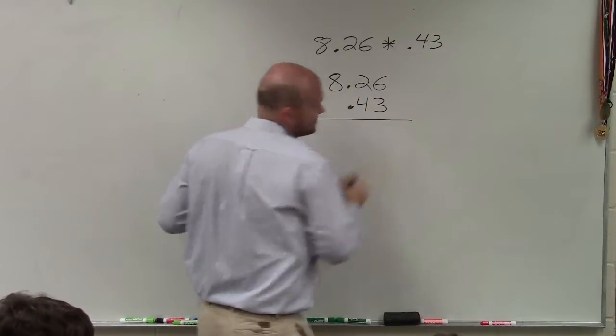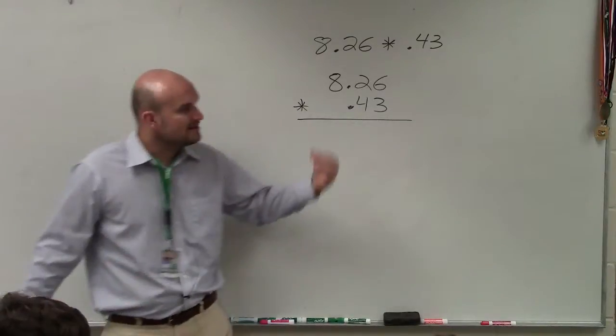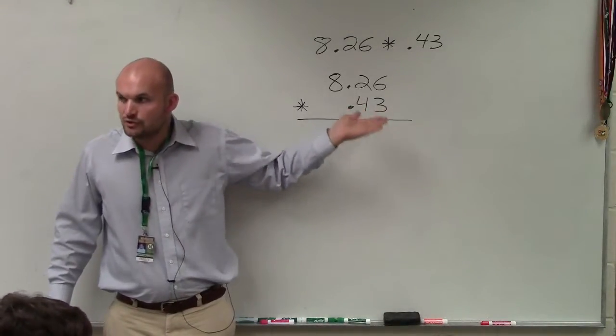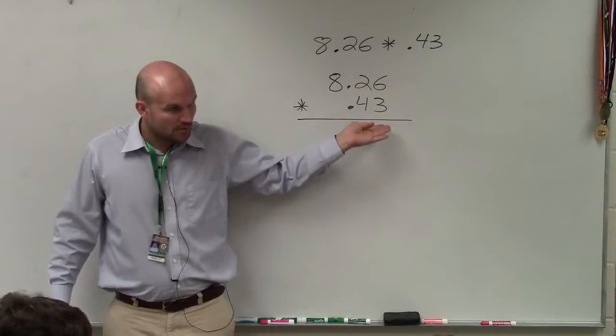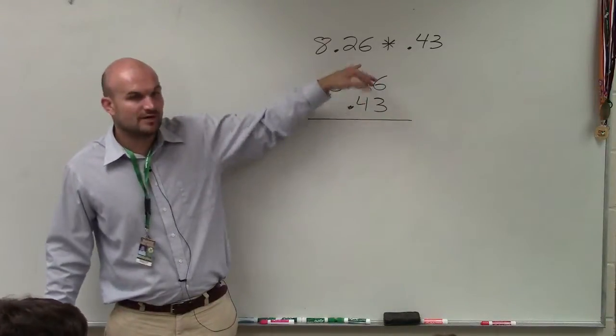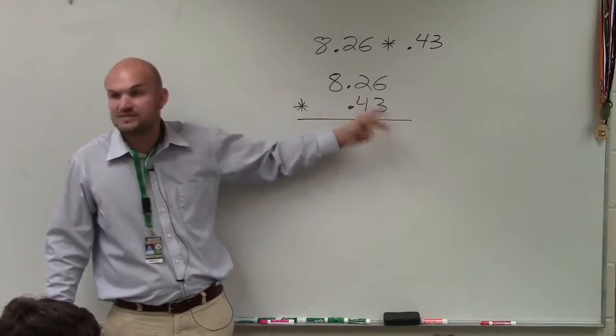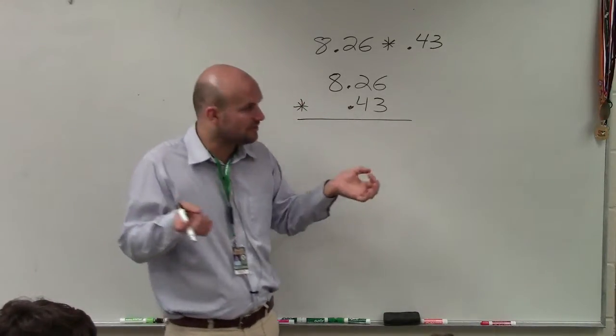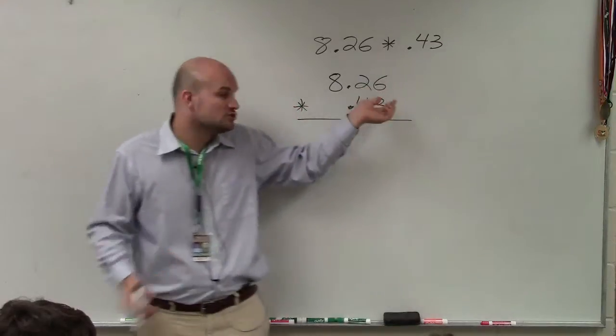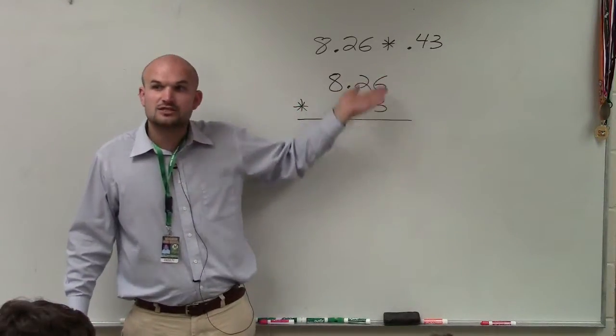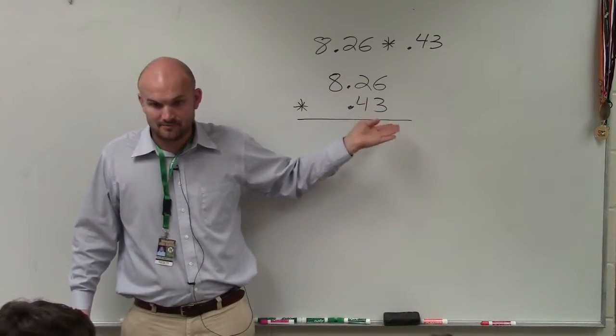The other thing that is similar to subtraction, always make sure you have the smaller of your two decimals below. You wouldn't want to rewrite this as 0.43 and then times 8.26. So when you're identifying how to multiply, always make sure you choose the smaller of the two to be below, to be on the bottom.